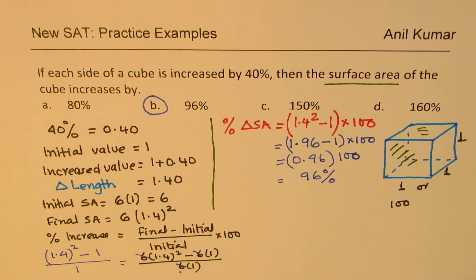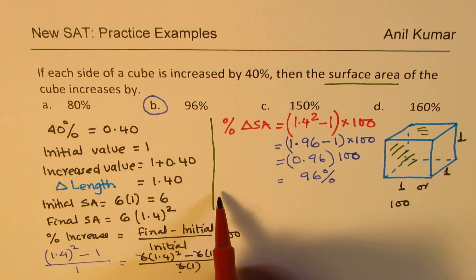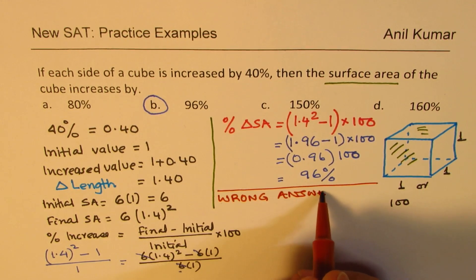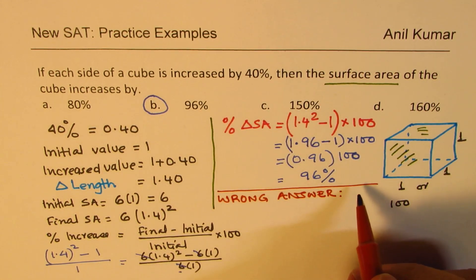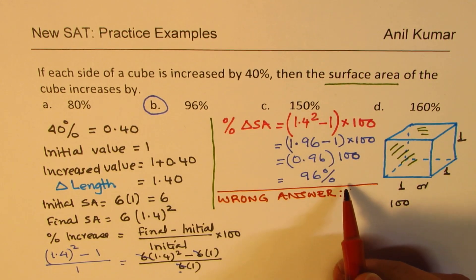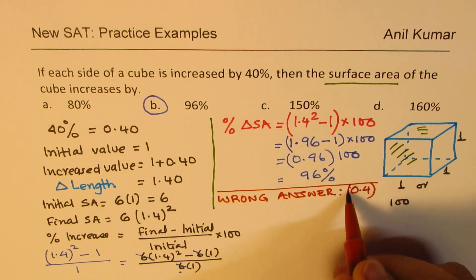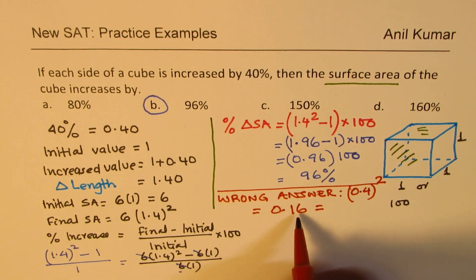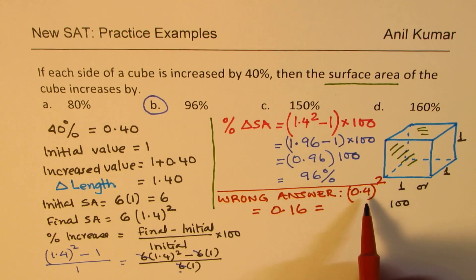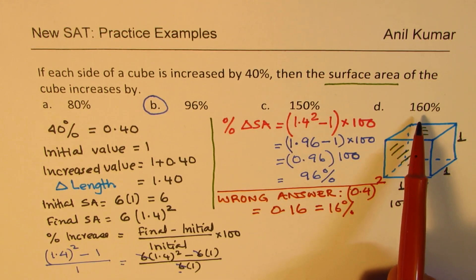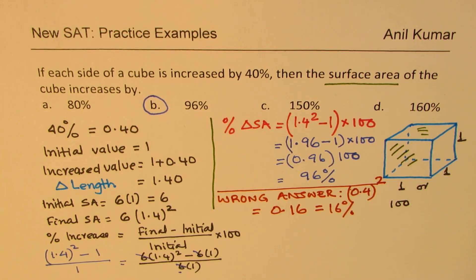Now let's look at a common mistake. Some people say: the side increases by 40%, which is 0.4, and surface area involves squaring, so they compute 0.4² = 0.16, giving 16%. This is wrong. There could be an answer option saying 16%, so be careful to avoid this mistake.